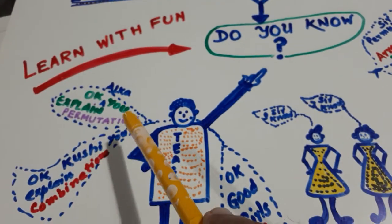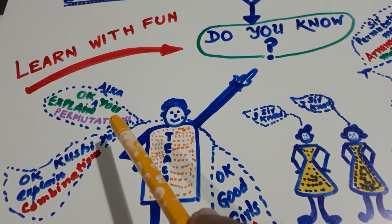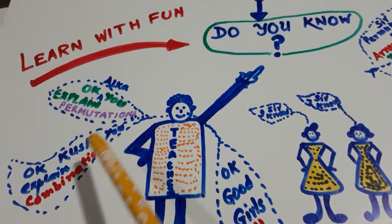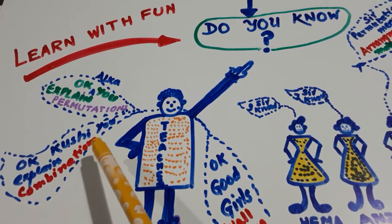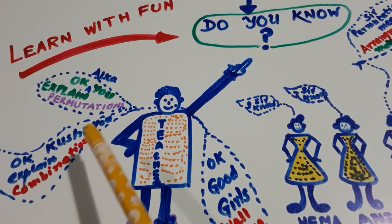Okay, Alka, you explain permutation. Kushi, you explain combination one by one.